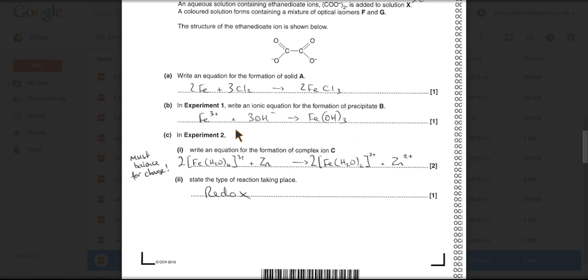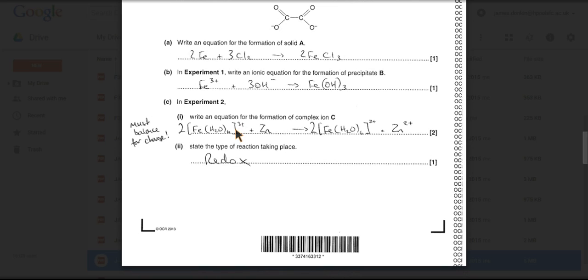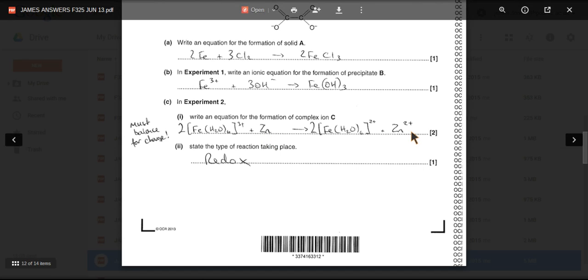The equation for experiment two is the reduction of the Fe^3+ to Fe^2+ by reaction with zinc. So the zinc is going to go to Zn^2+. You can see the charges there, going from 3+ to 2+.